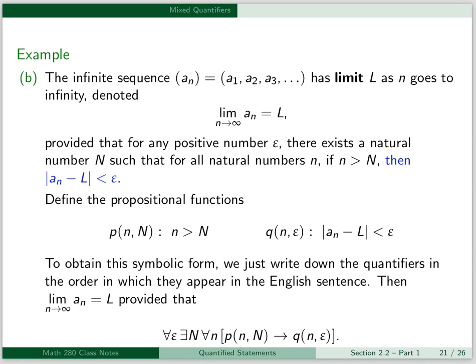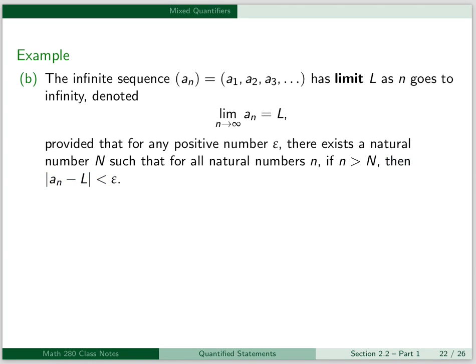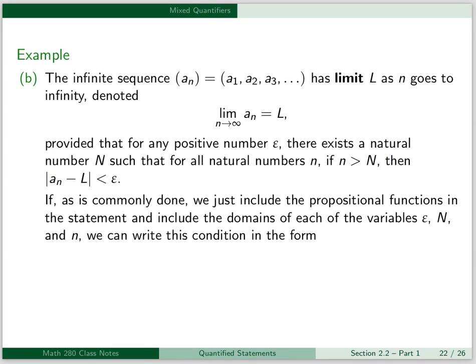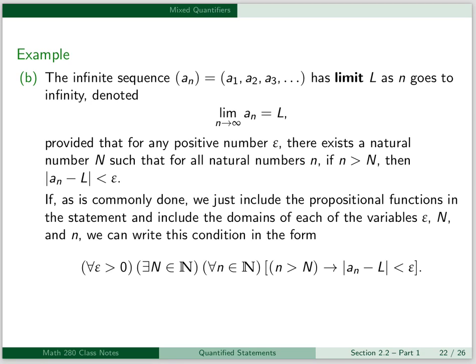So even though the definition is very complicated, obtaining this symbolic form is relatively straightforward. We just write down the quantifiers in the order in which they appear in the English sentence. If we include the propositional functions and domains of each variable — epsilon, capital N, and little n — we can write this condition as: for all epsilon greater than 0, there exists a capital N in N, such that for all little n in N, little n greater than capital N implies the absolute value of a sub n minus l is less than epsilon.